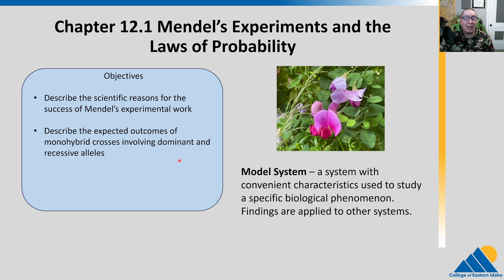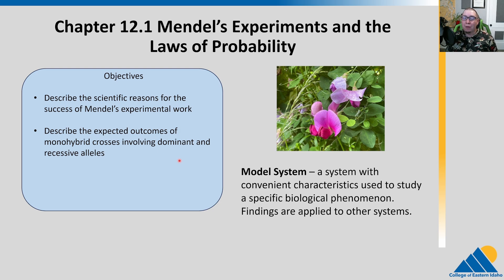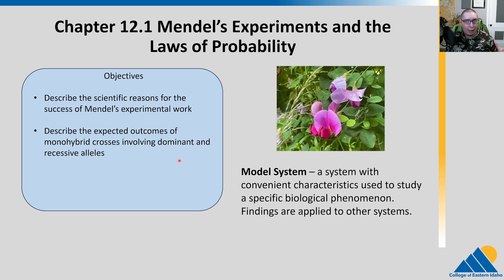Particularly because he had easy-to-observe traits — he could see flower color, seed color, or seed shape. Those are really easy to see. They also produce a lot of offspring. For genetics and the mathematics behind it, we're going to need huge sample sizes. Humans, we're looking at one, maybe two — weird cases, up to eight offspring. Pea plants create hundreds of offspring, and you can get easily thousands in a small space.